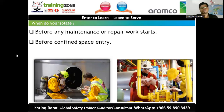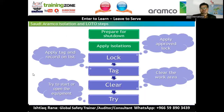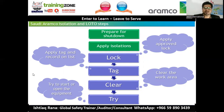When do we isolate? When we want to repair something, execute a maintenance project, or enter a confined space such as a pipeline, tank, or vessel. The isolation and LOTO steps are: prepare for shutdown, apply isolations, apply approved locks and tags, clear the work area, and then verify — validate that your isolation and LOTO has been done successfully, double-checking there is no chance of any of the five fatal failures.